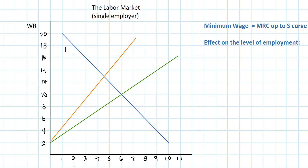Let's have a look at our graph here, which as you can see is missing some labels. Let's add those labels. The downward sloping blue line represents the individual employer's demand and marginal revenue product of labor. It's downward sloping because at lower wage rates the firm would be willing to hire more workers, due to the fact that the revenue attributable to additional workers decreases thanks to diminishing marginal returns.